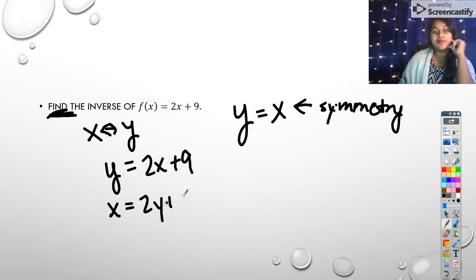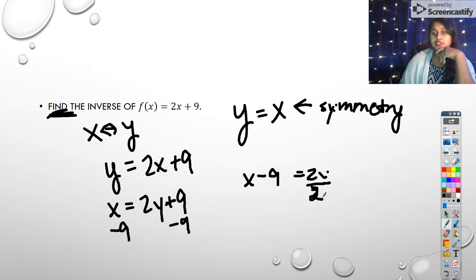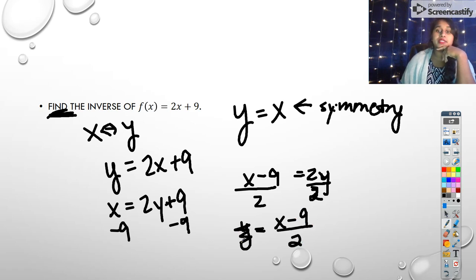So this is currently saying y equals 2x plus 9. Well, I'm going to flip those variables. And now I solve for y. So I'm going to subtract away the 9. That becomes x minus 9 equals 2y. I divide the 2 because I'm trying to get y by itself. So that tells me y equals x minus 9 over 2. Well, we know that this isn't y. We know that that's the inverse. So we write it as an inverse.